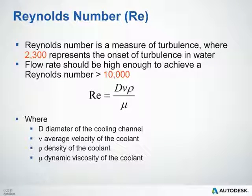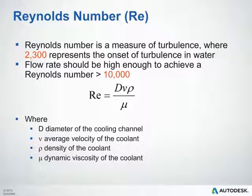Turbulence is measured by the Reynolds number. A Reynolds number of 2300 represents the onset of turbulence within water. We like to see flow rates that achieve a Reynolds number of at least 10,000 or greater. The equation for Reynolds number includes several variables: the diameter of the cooling channel, the velocity of the coolant, the density of the coolant, and the dynamic viscosity of the coolant. This Reynolds number can be impacted not only by channel size and flow rate, but also by the type of coolant you're using.